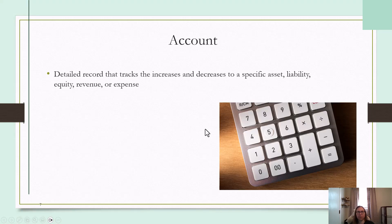An account is a detailed record that tracks the increases and decreases to something such as an asset, liability, equity, revenue, or expense. So all this means is that you're going to have an advertising expense account — anytime you do anything to advertising expense, you're going to either add or subtract to that account. You're going to have a building account — anytime you add to your buildings or sell or get rid of any buildings, you're going to add and subtract to the building account.